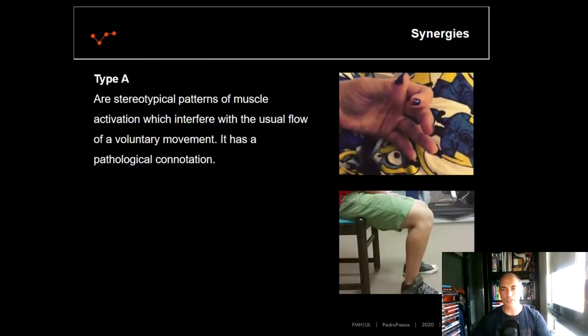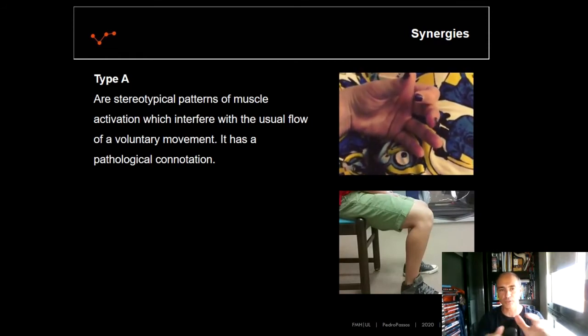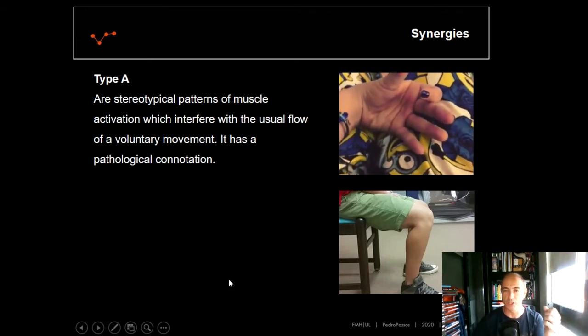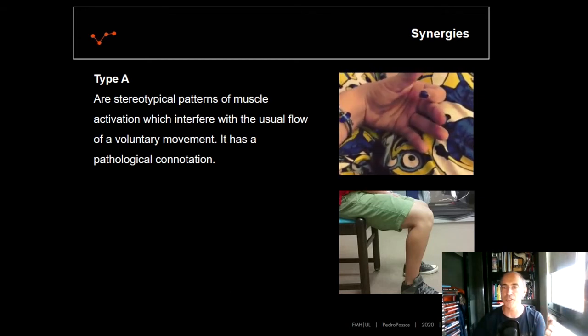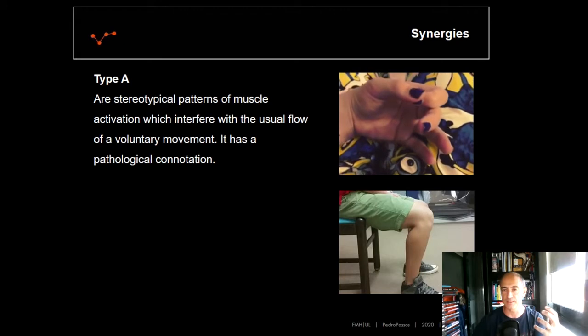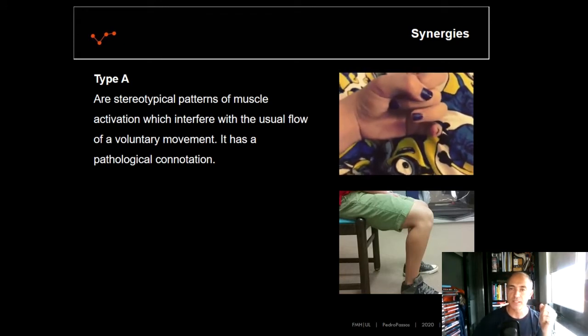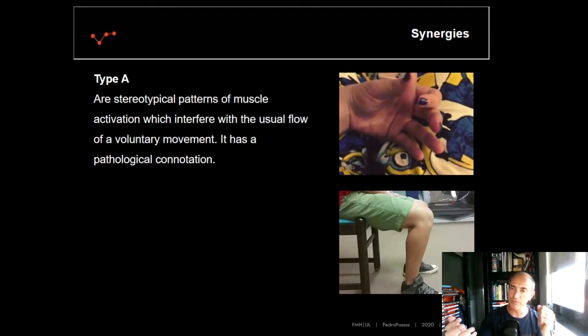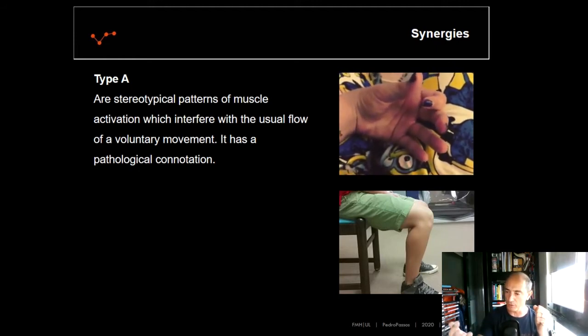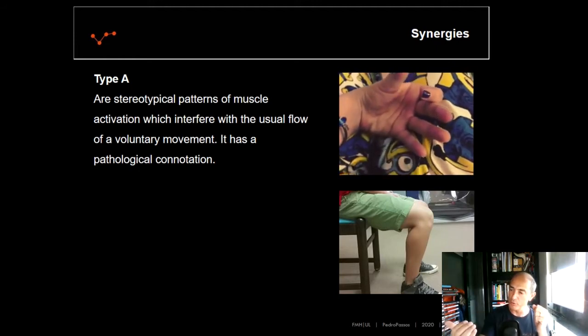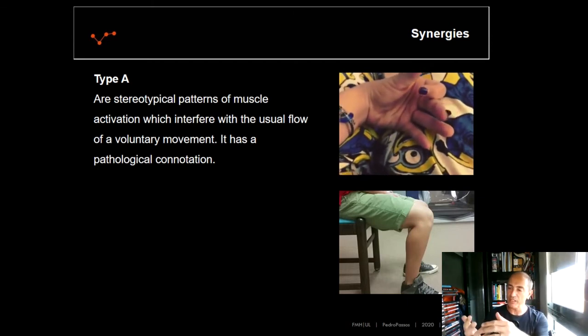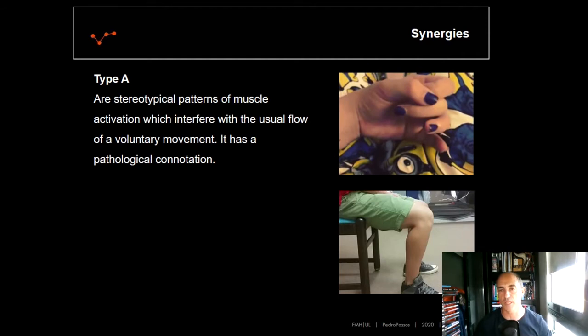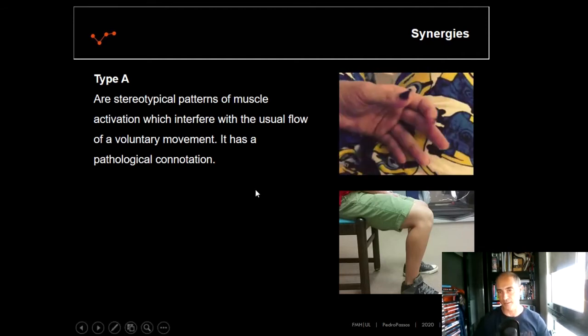You can find in the literature three types of synergies. The first one is Type A synergy, usually associated to patients with neurological diseases. As you can see, it means the muscles work together, but they cannot do a fluid movement. This movement of closing the hands, if we do it, our fingers will adjust to each other to perform a fluid movement. That does not happen in these kinds of movement here.